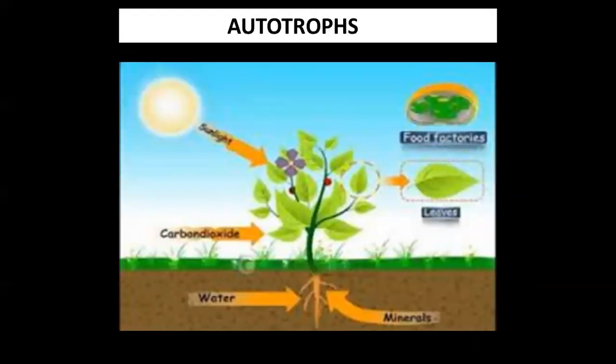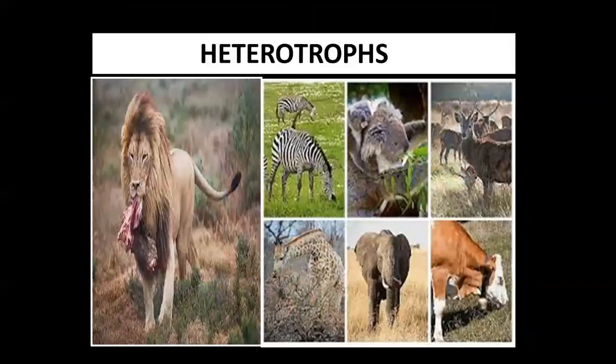Another difference: plants are autotrophs. They prepare their own food with the help of certain raw material and sun energy. On the other hand, animals are heterotrophs.